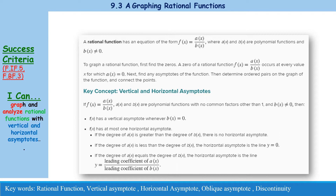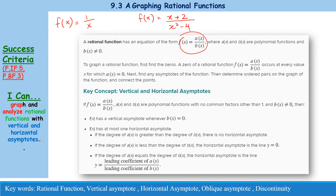First of all, what are rational functions? Any function given in the form of a(x) over b(x) is said to be a rational function. The parent function of the rational function is 1 over x, meaning all such functions originate from this parent. The numerator can be any polynomial such as x+2, x²-2, or x²-16, and some variable expression is written in the denominator.